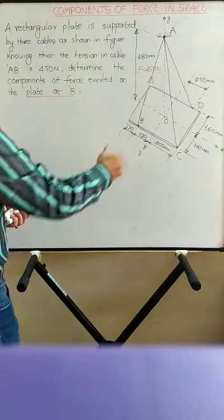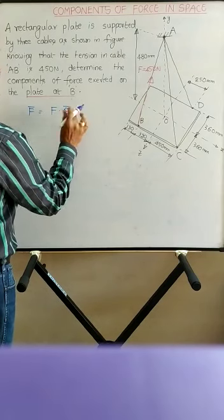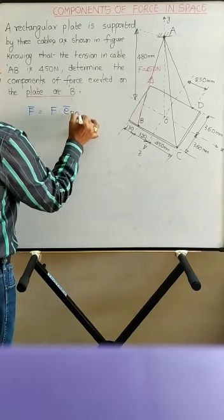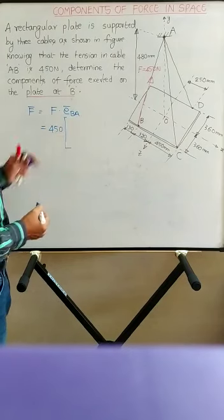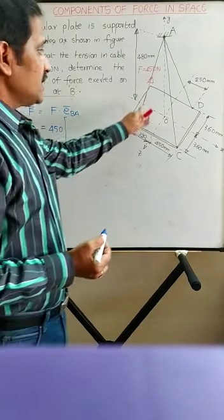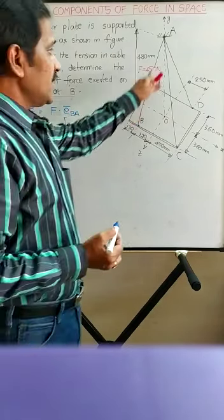Now, to find out the components of this force F, let us first write the force vector. The force vector can be written as the magnitude of force into the unit vector. This force is acting along the line BA, so you have to write the unit vector along BA. The unit vector along BA is the position vector along BA divided by its magnitude. To write the position vector, you must know the coordinates.